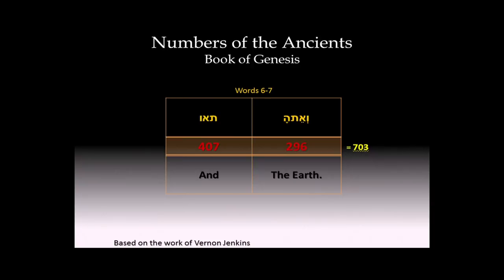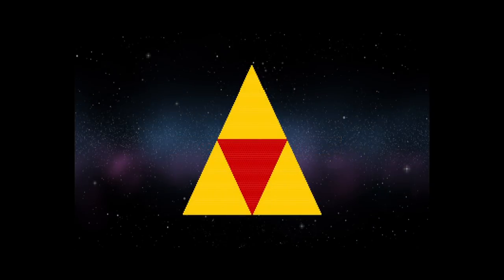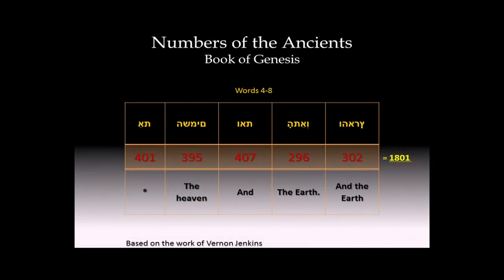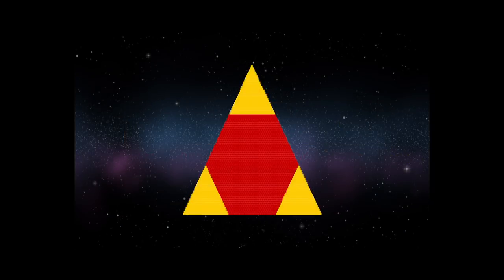And in the next one, words 6 and 7 and the earth have a numerical equivalent of 703, and in this graphic you see a 703 triangle inset in the original 216-outline triangle. But one of the things to note is that all of the resultant three yellow triangles that you see all have 666 units each, which I thought was pretty interesting. The next group, we have words 4 through 8, the heaven and the earth, and the earth, which has a numerical value in Hebrew of 1801. In this graphic, we see an 1801 hexagon inset in the original 216-outline triangle. And one of the other things to note is that each side has 25 units, the perimeter is 144 units, and there are 49 rows, which all are perfect squares.